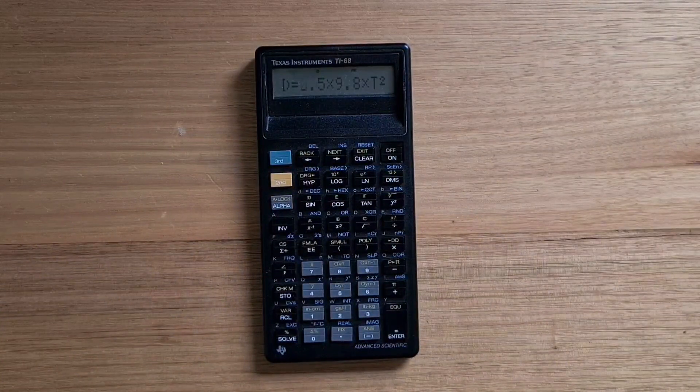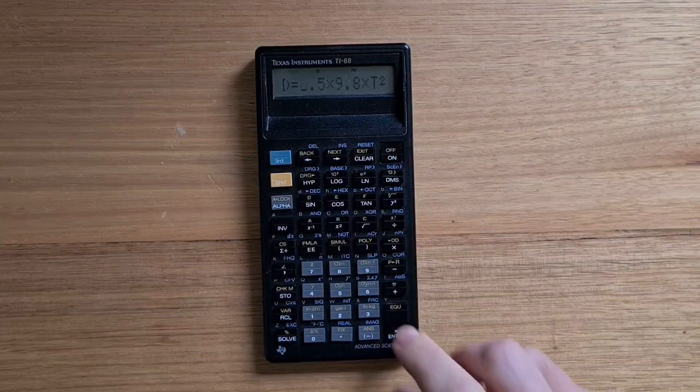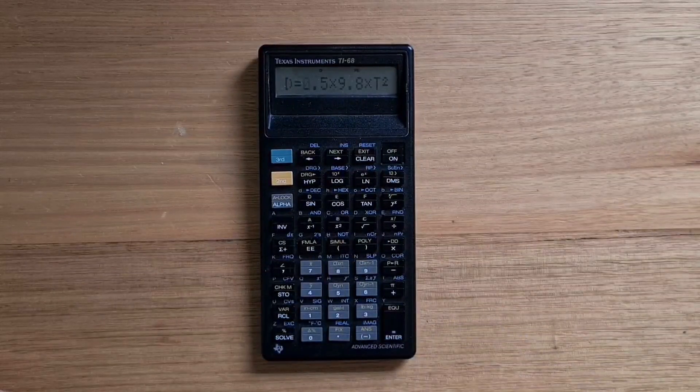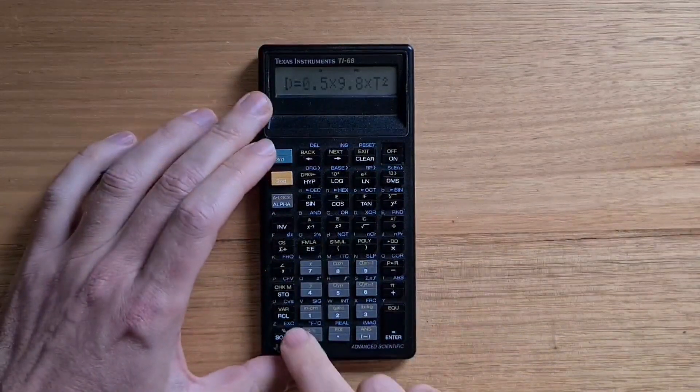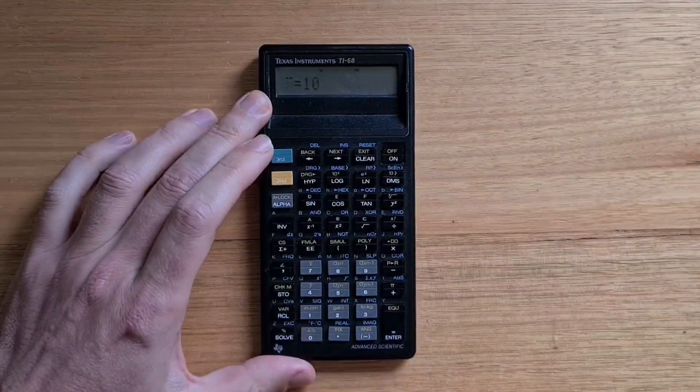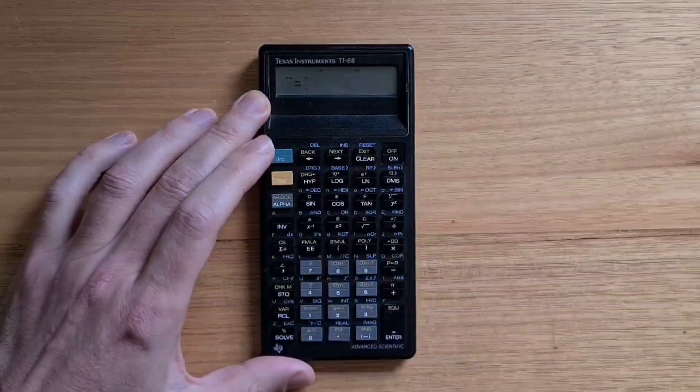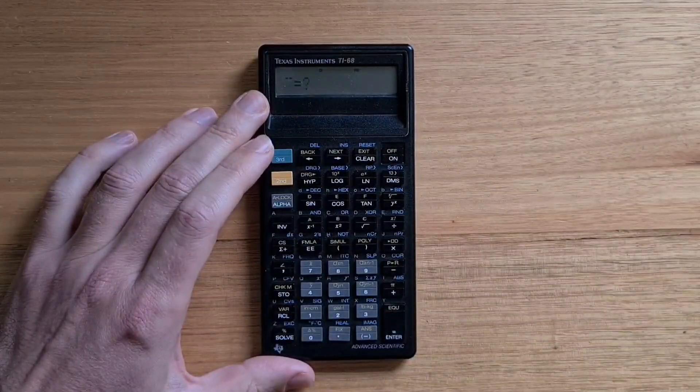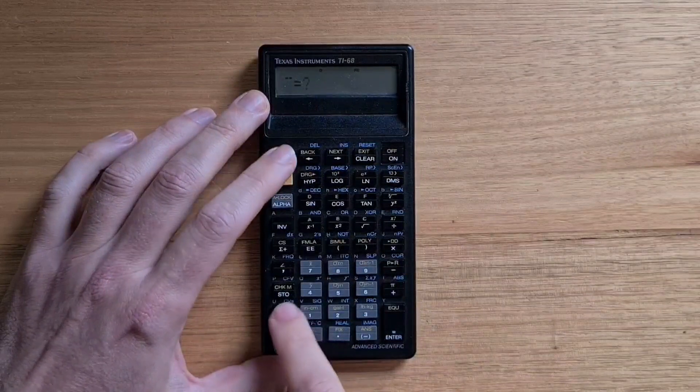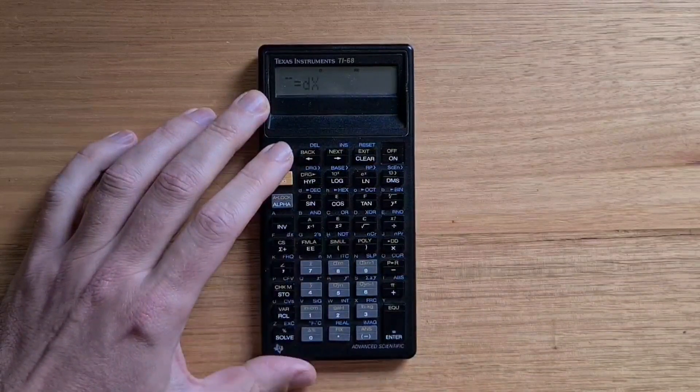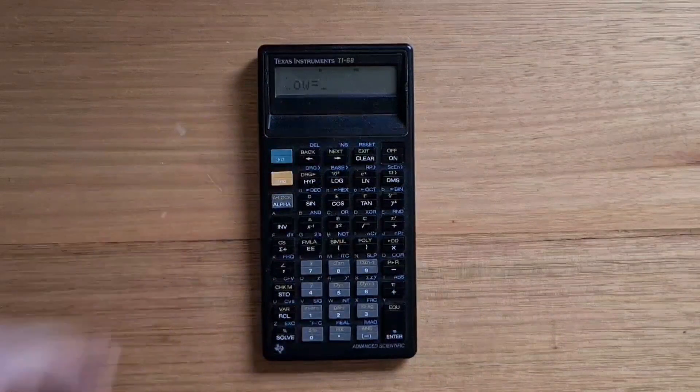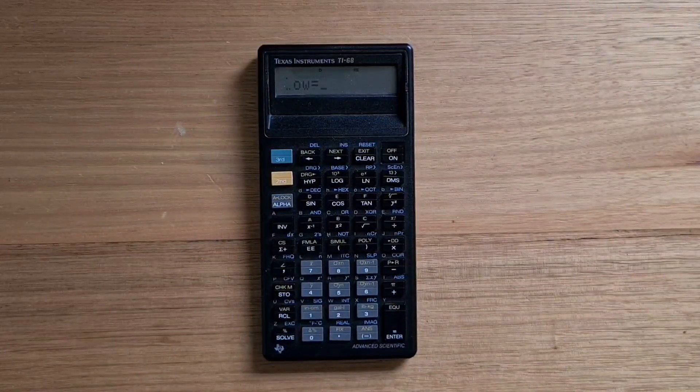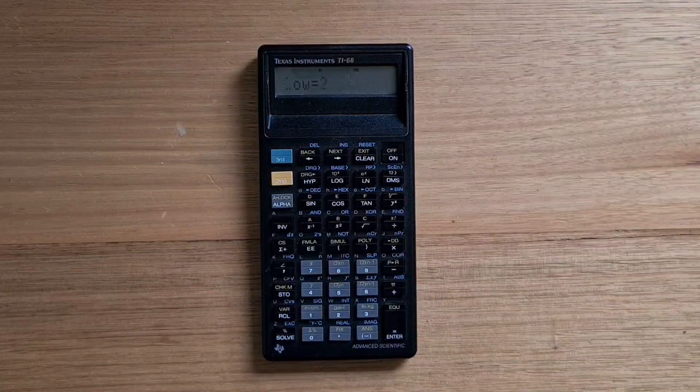You can also numerically integrate a formula, and this works through the full function again. So again, we'll solve our fall distance equation. Now instead of entering a number for t, we'll hit blue shift and dx.